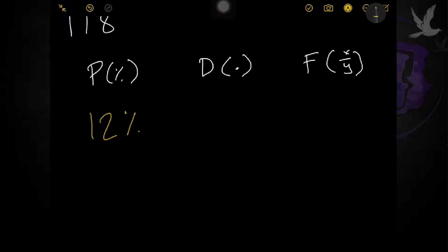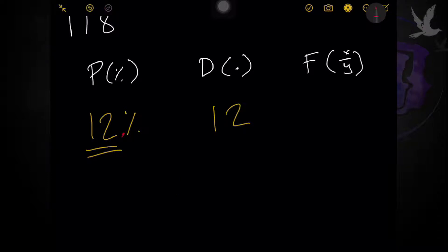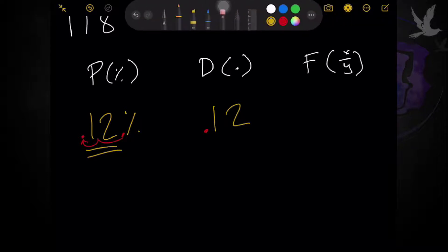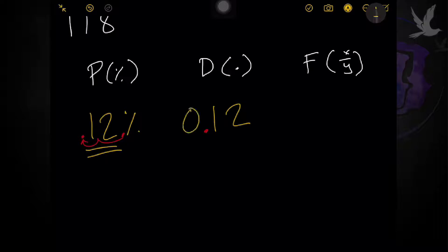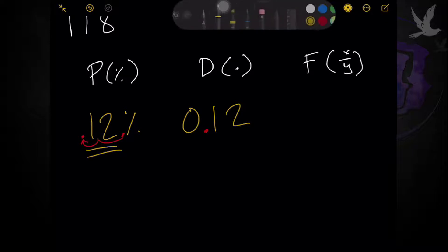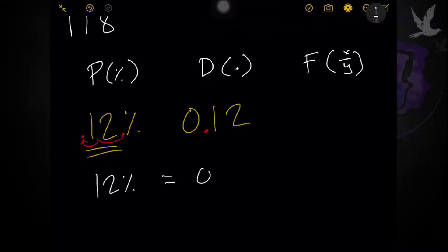Changing a percent to decimal is basically taking the same exact digit value — it's just that from percentage, you move two decimal places to the left. The decimal place of a whole number is always after it, since it is a whole number. So for 12, the decimal is always after it, and moving two decimal places to the left we have one, two — so the decimal is now placed here. For formality, when we have a decimal in this format, you add a zero before it. So 12% in decimal is equivalent to 0.12.